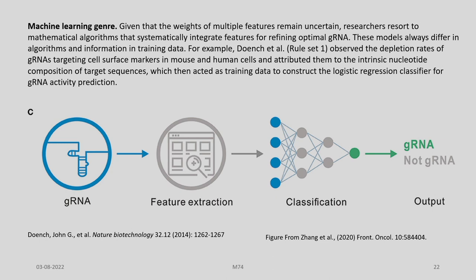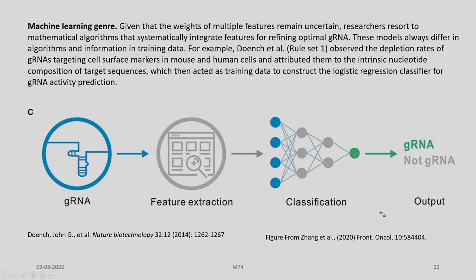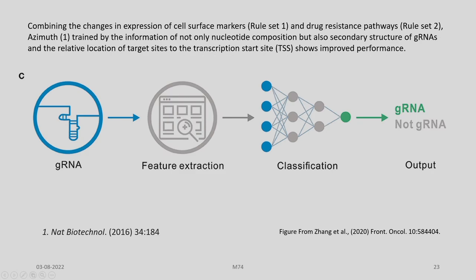Here, the gRNAs are analyzed, features are extracted, classification takes place, and probable candidates are selected as gRNAs while the remaining are left out. Combining changes in expression of cell surface markers and drug-resistant pathways — which fall under Rule Set 1 and Rule Set 2 respectively — it was trained using not only nucleotide composition but also secondary structure of gRNAs and the relative location of target sites to the transcription start site, showing improved performances.